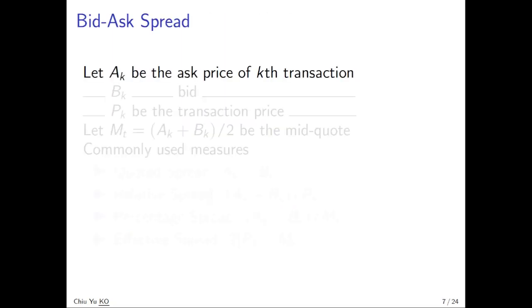Bid-ask spread. Now we are going to tell you the definition of bid-ask spread as opposed to the data. First, we say we have all the details of data. A_k is the ask price at the k-th transaction, B_k is the bid price at the k-th transaction, and P_k is the transaction price of the k-th transaction.